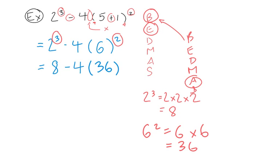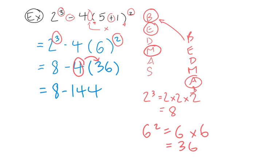Next we do multiplication. We have a number in front of brackets, so we use the distributive property. The 4 is distributed to everything within the brackets, so 4 times 36 equals 144. This leaves us with 8 subtract 144.